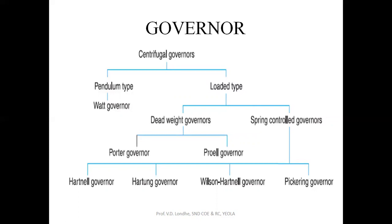The Spring Controlled Governor is categorized into four types: Hartnell, Hartung, Wilson-Hartnell, and Pickering Governor.